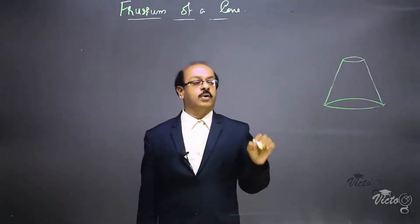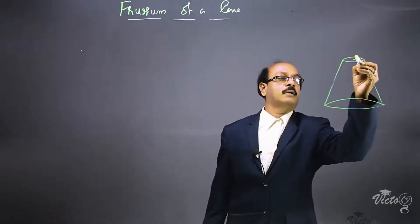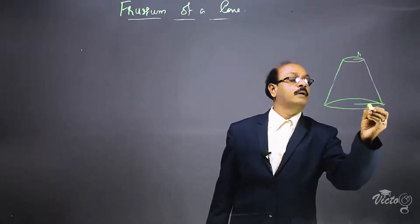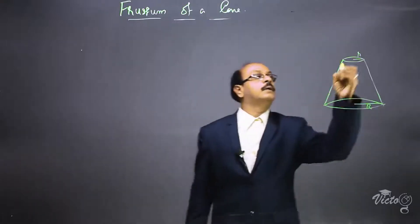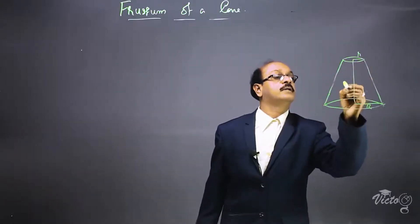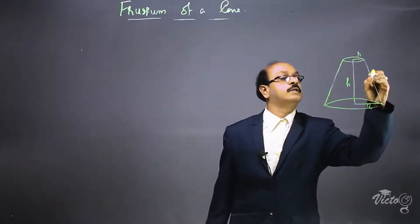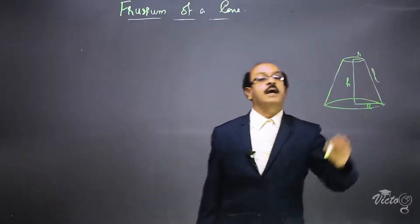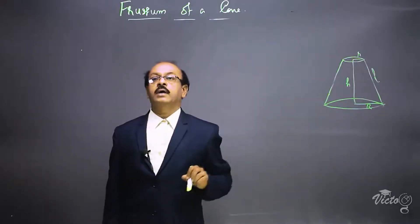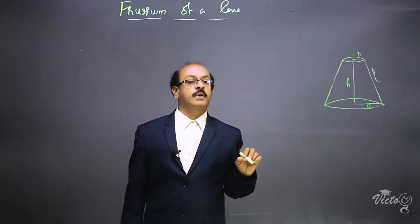After removing the small cone from the top, the small r is the radius of the top, capital R is the radius of the lower part, h is the height of the frustum, and l is the slant height of the frustum. There are some formulas related to this.